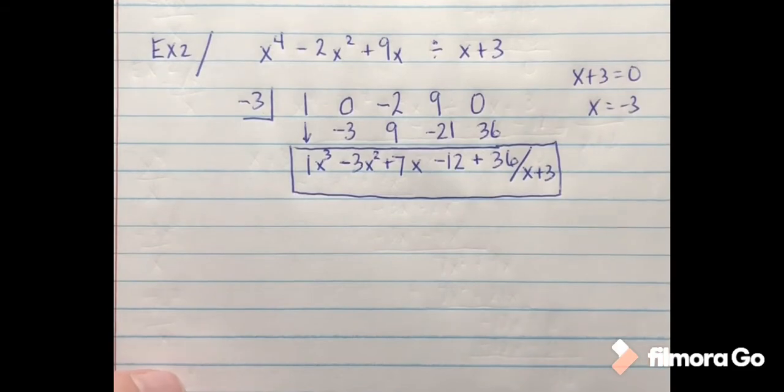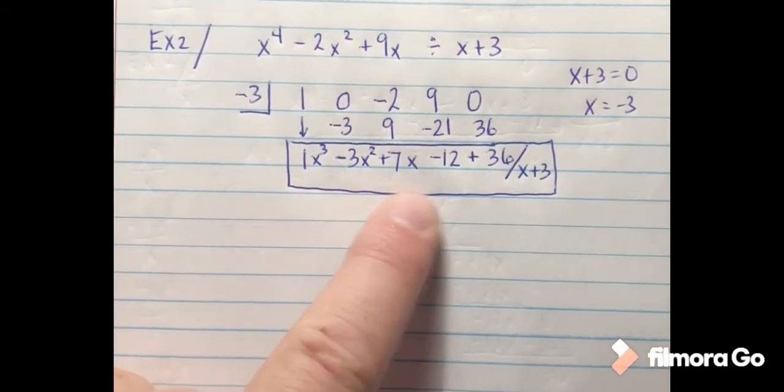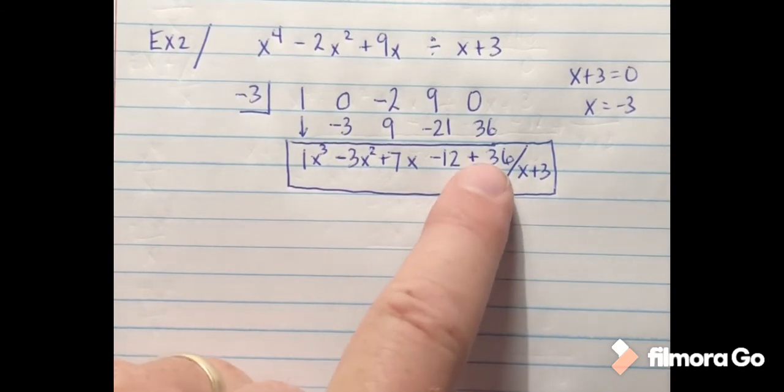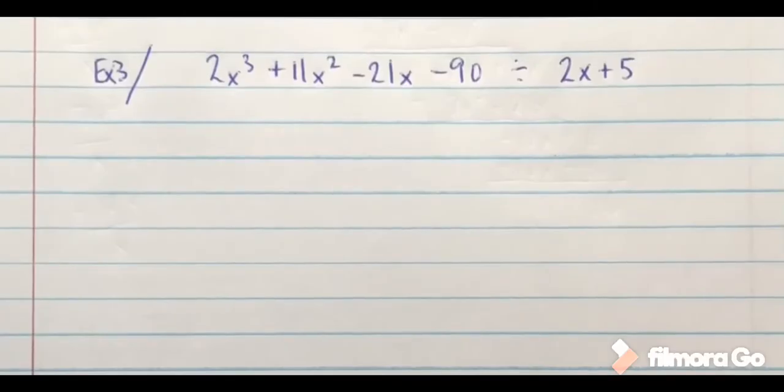So here would be my answer for this particular one: 1x to the third minus 3x squared plus 7x minus 12, plus the remainder 36 over x plus 3.